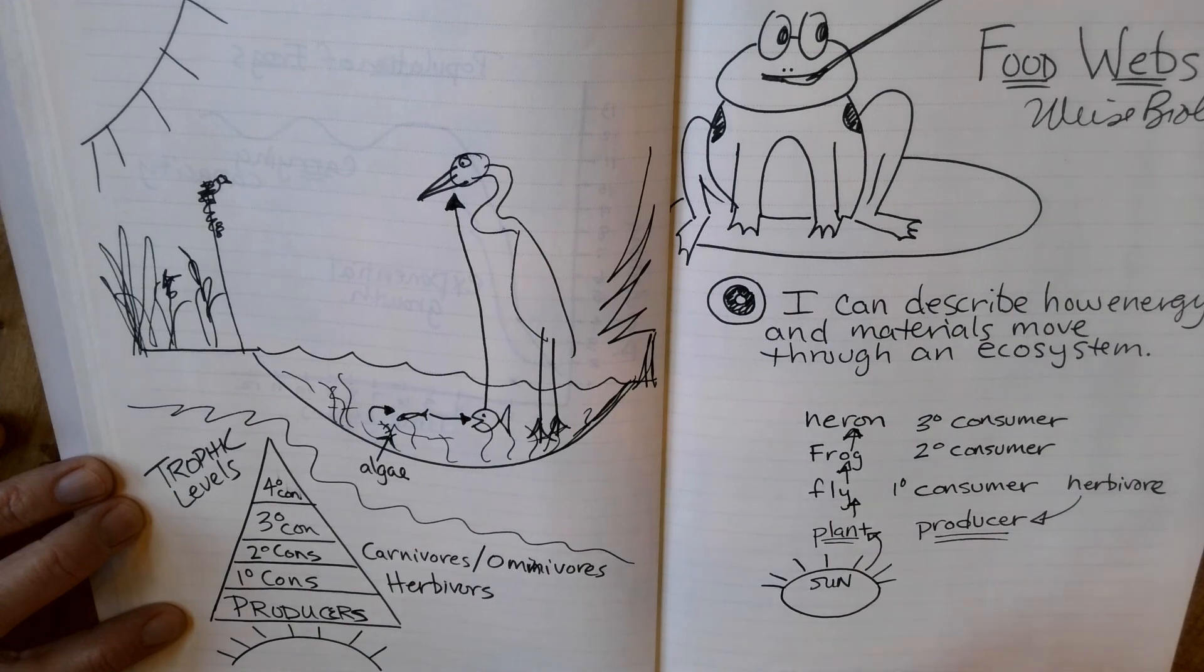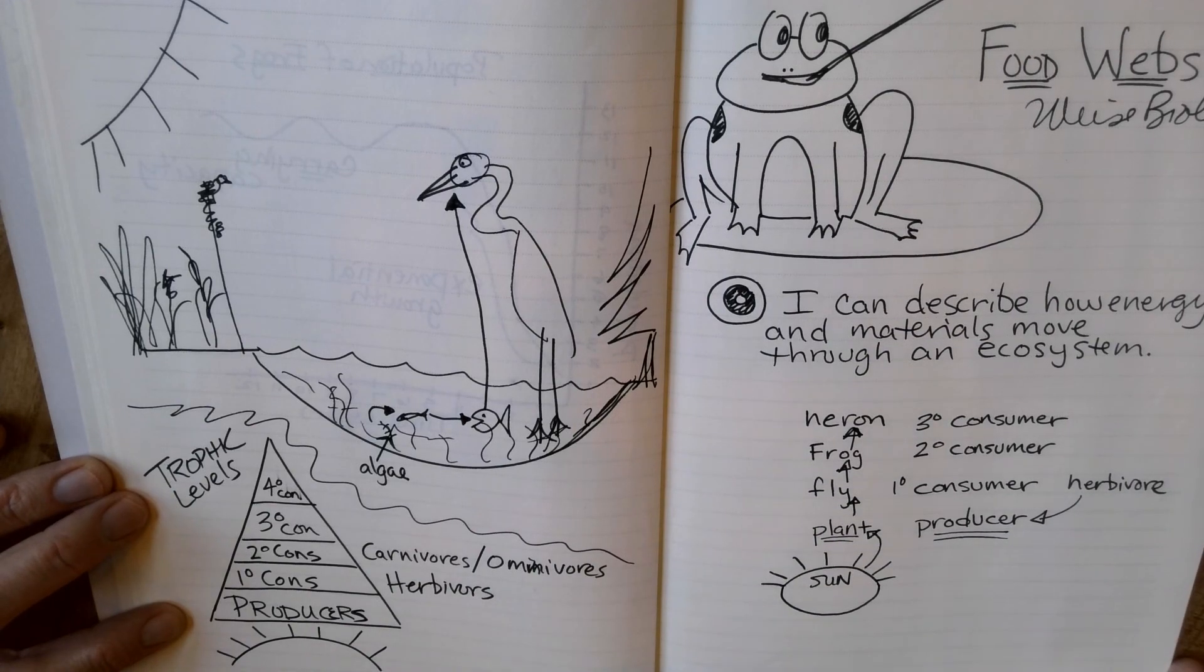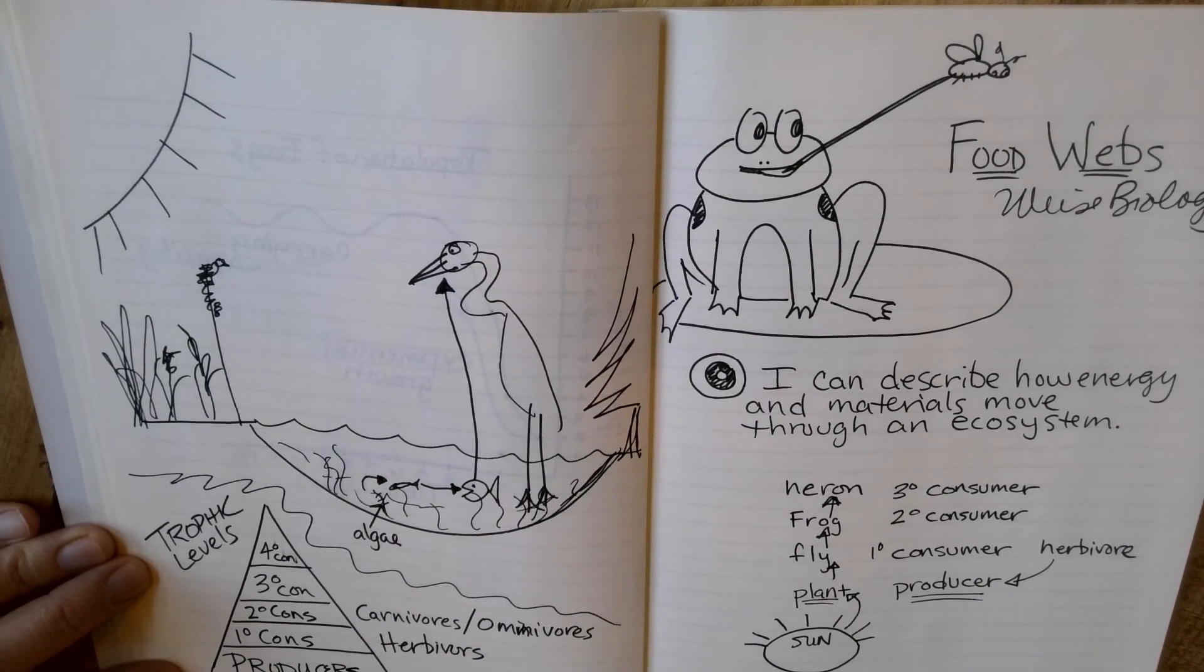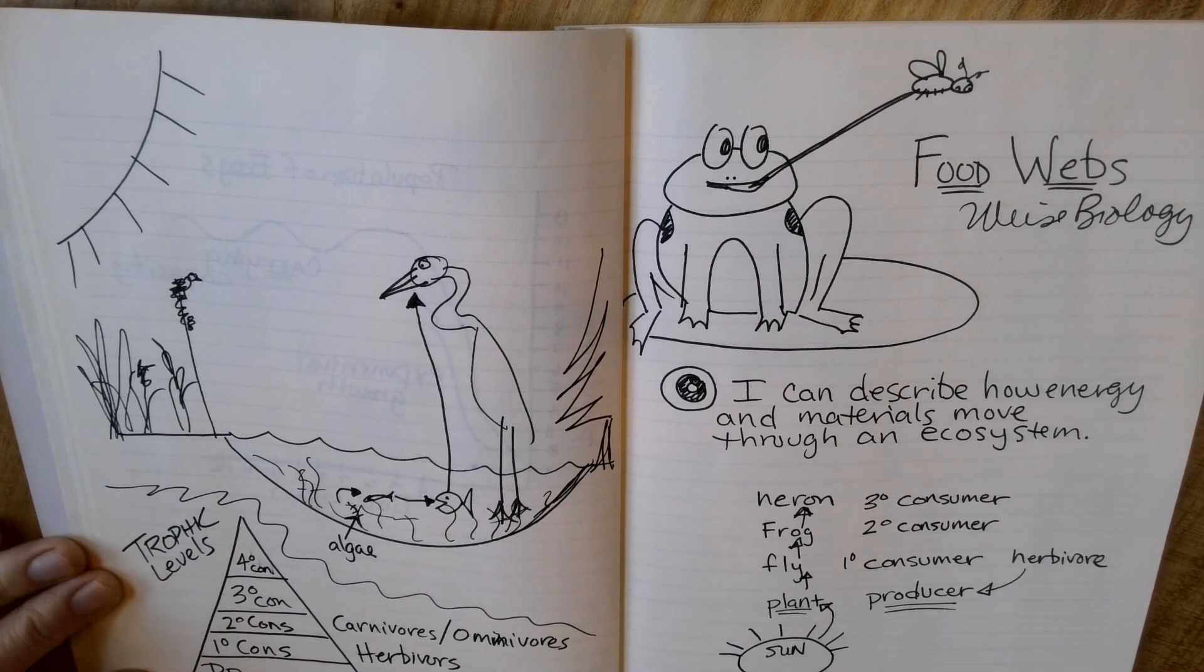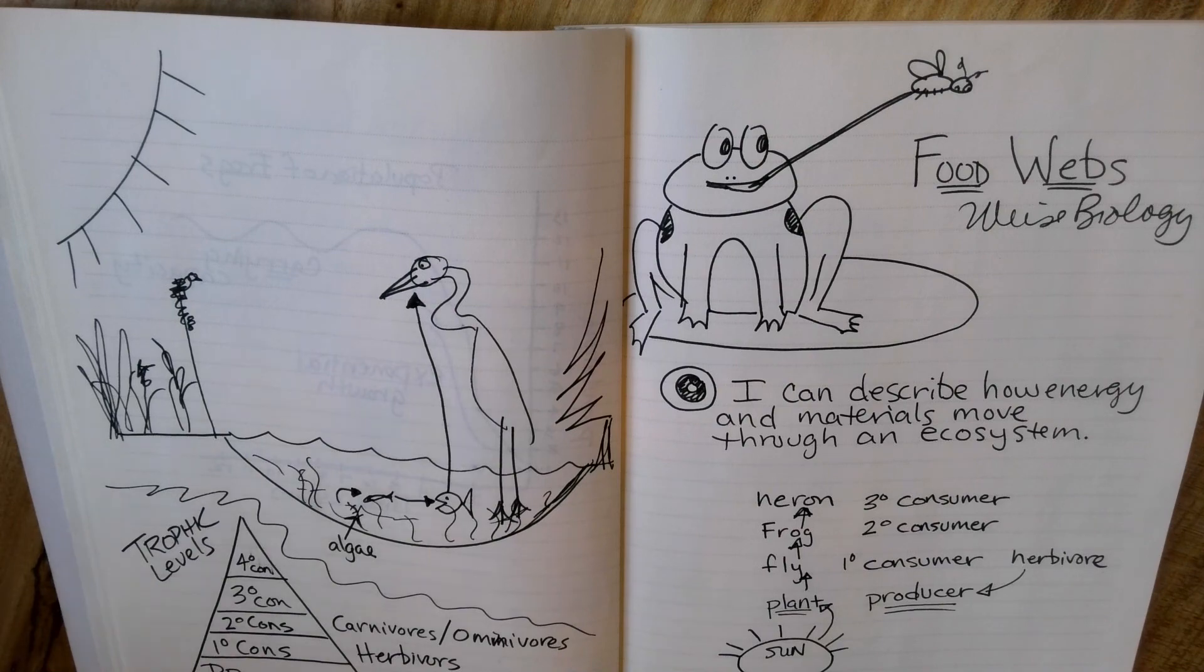That's kind of the only difference between a food web and a food chain. The food webs are kind of a more realistic depiction of what it looks like. So I hope that helps you with your assignments. And I also hope you have a great day.